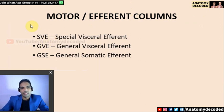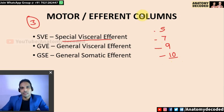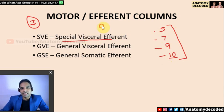Motor components are three in number. Whenever a component is referred to as special visceral efferent, it refers to the muscles of the pharyngeal arches. The nerve of the first arch is the mandibular nerve from the trigeminal nerve; the seventh facial nerve is the nerve of the second arch; the glossopharyngeal nerve is the nerve of the third arch; and the vagus nerve serves the fourth and sixth arches together — the fourth via the superior laryngeal nerve and the sixth via the recurrent laryngeal nerve. The key word for special visceral efferent is pharyngeal arches.